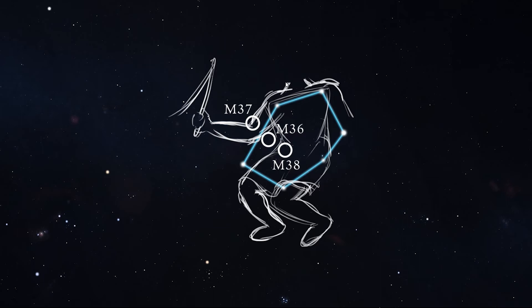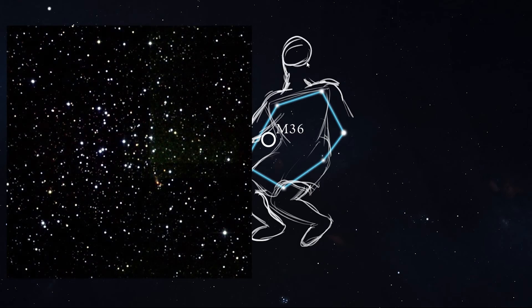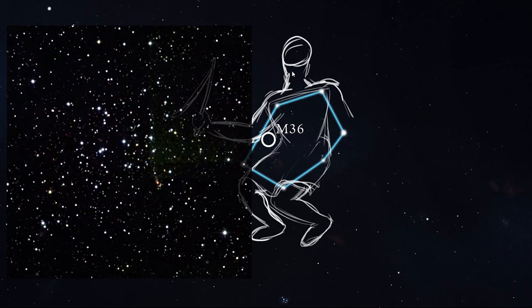These make great targets for binoculars or telescopes. M36 is the smallest of the three star clusters, and it has an apparent magnitude of about 6.